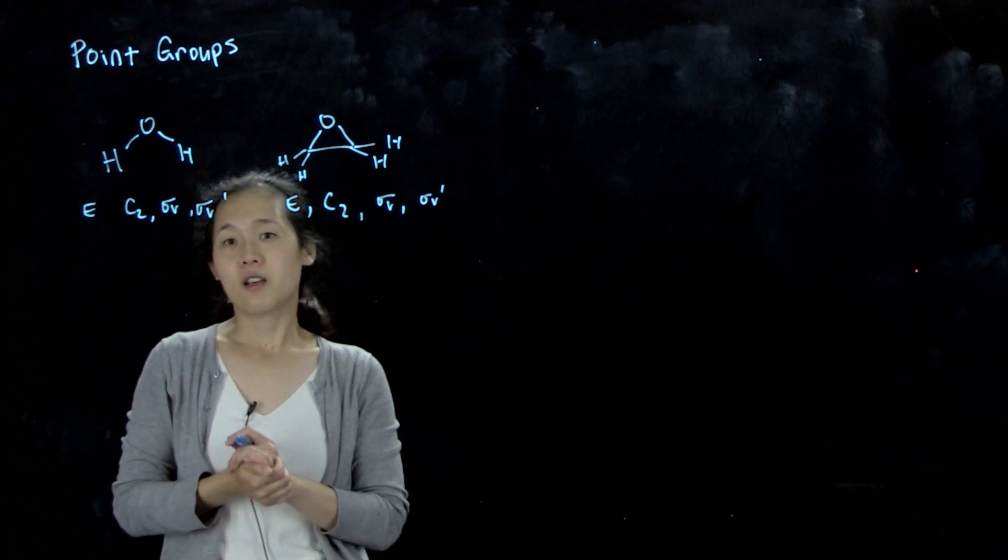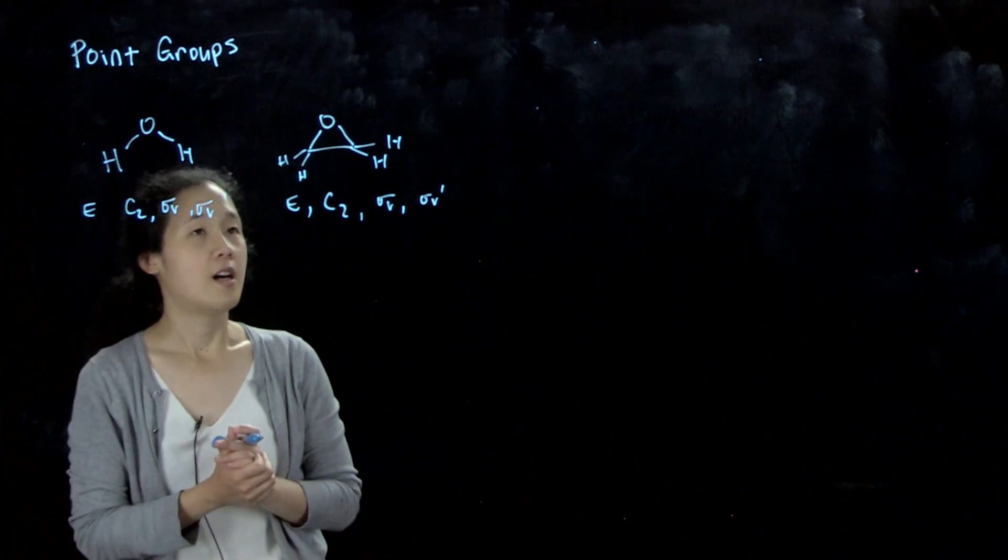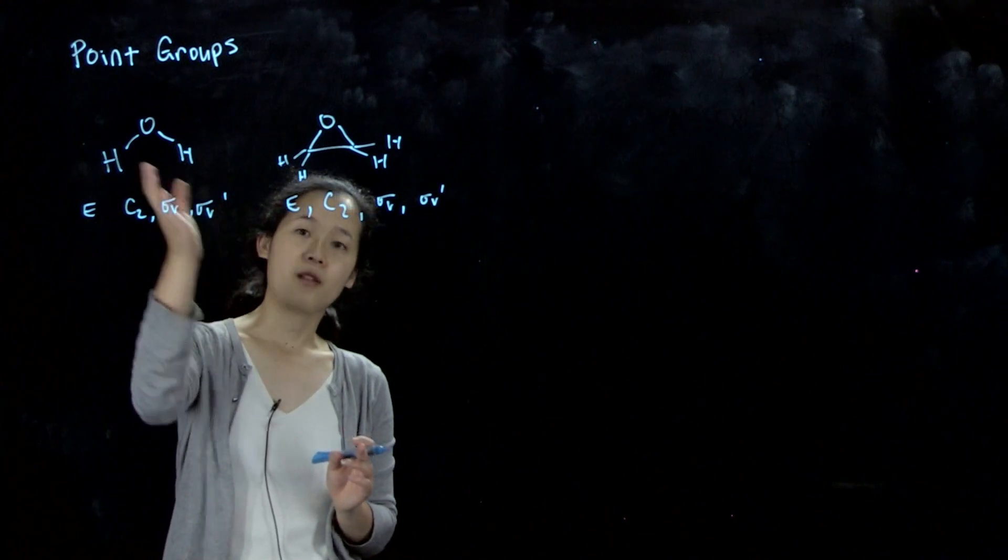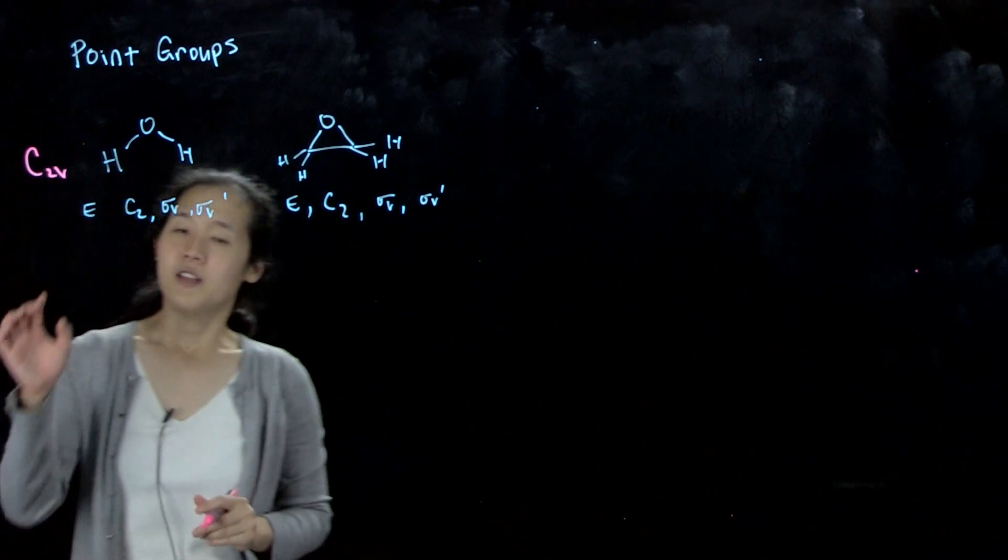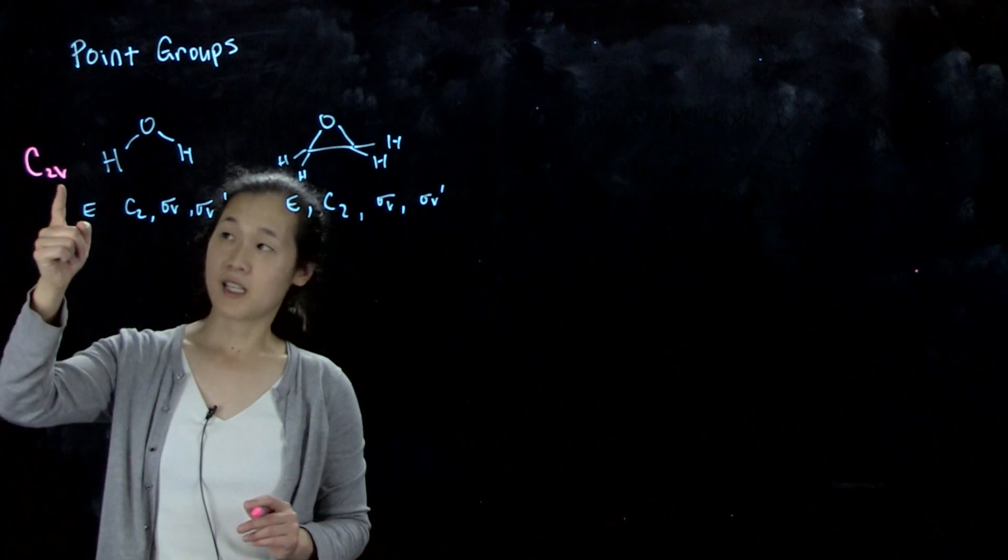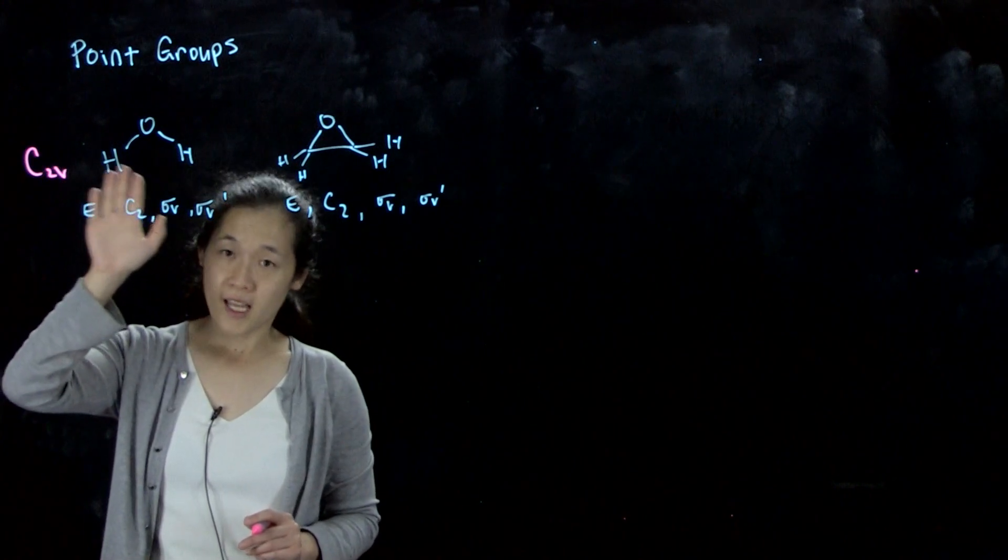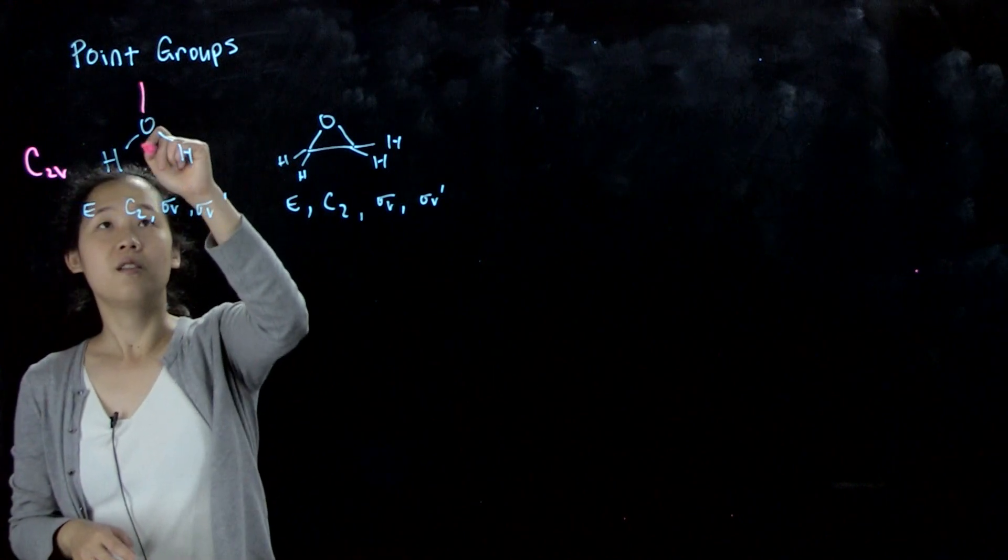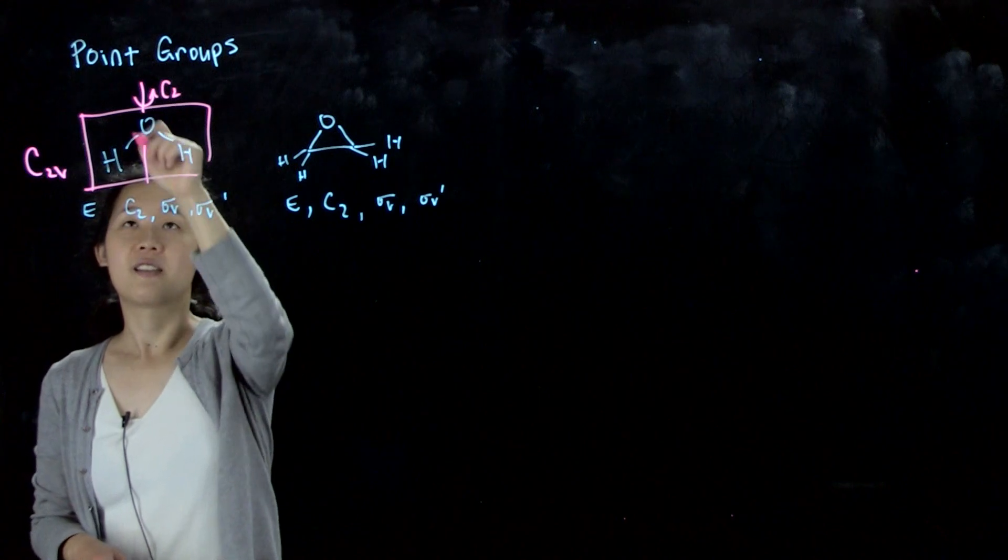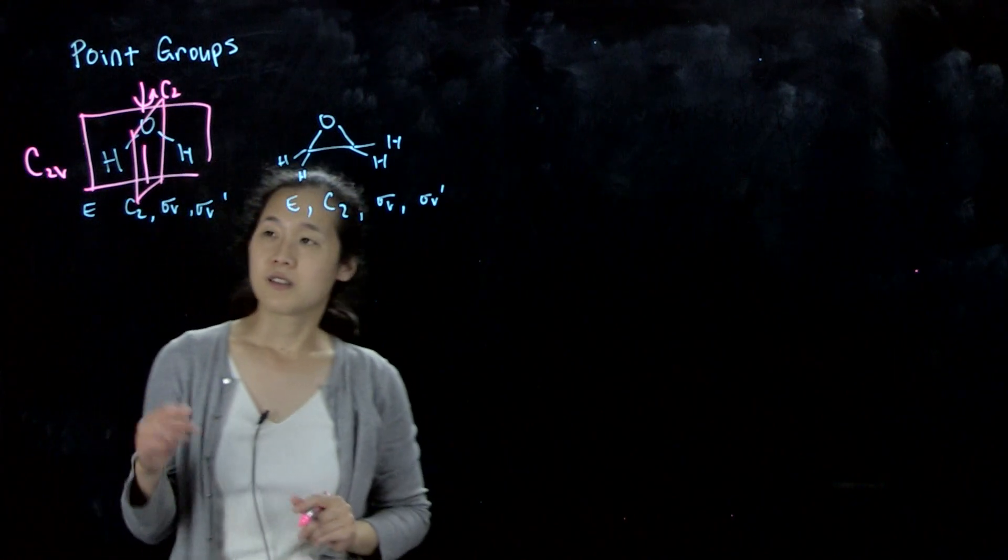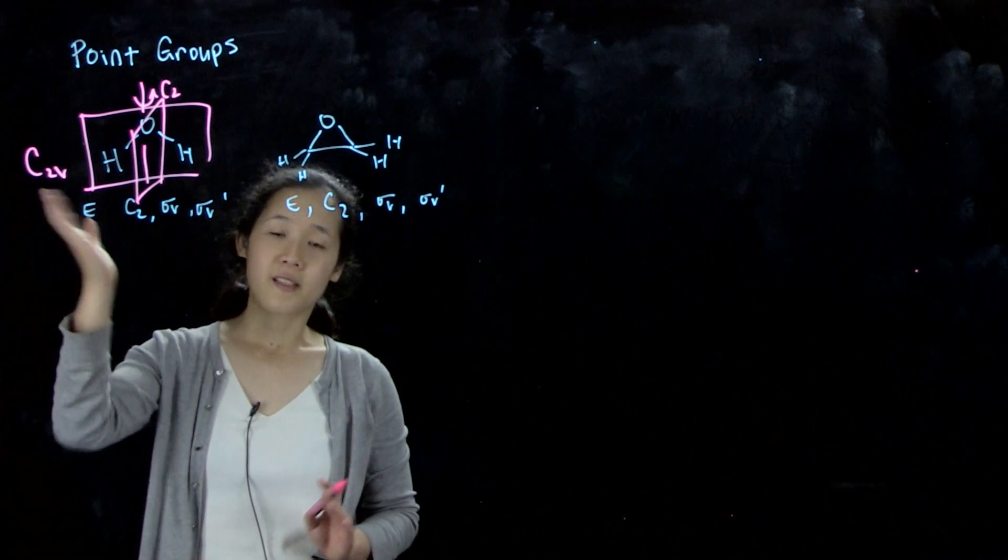For this class, we want to be able to assign every molecule's point group by looking at its symmetry operations that are available. In this example, these two molecules are in what's called C2V. This means that there's a central axis of rotation, there's a C2 which is the highest axis of rotation, and also that it has mirror planes that contain the axis. Both mirror planes contain this axis, so we don't have a sigma H. C2V stands for vertical mirror plane.